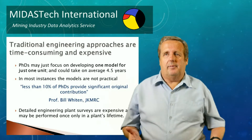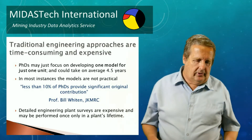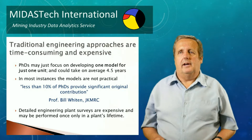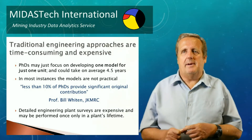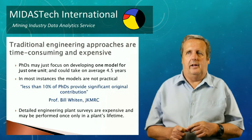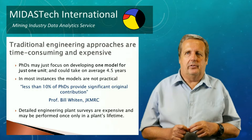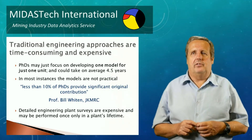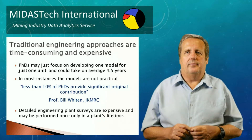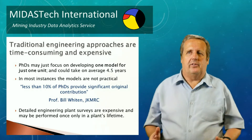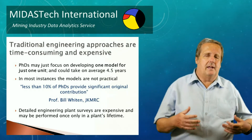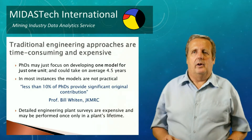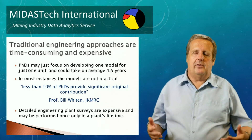To give you an idea about the conventional ways of fitting models: developing a model might be a PhD project. At JKMRC, PhD students may focus on developing just one model for one unit, taking on average four and a half years. In most instances the models are not practical — only 10% of PhDs provide a significant original contribution. Plant surveys are expensive and may be performed only once in a plant's lifetime, if at all; there are many plants where there has been no survey whatsoever. The approach recommended here requires fewer measurements, making it practical.